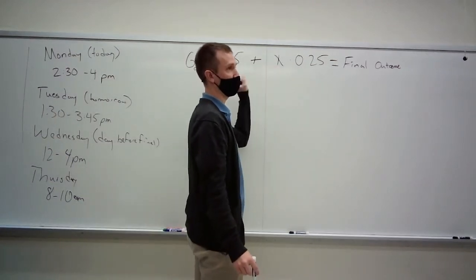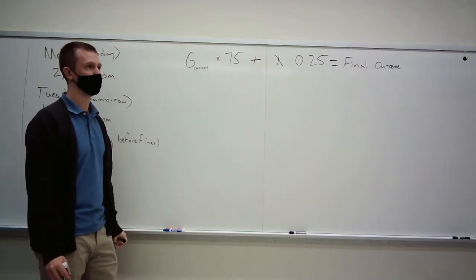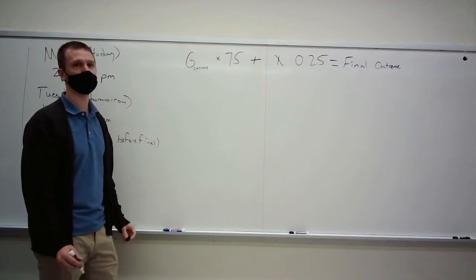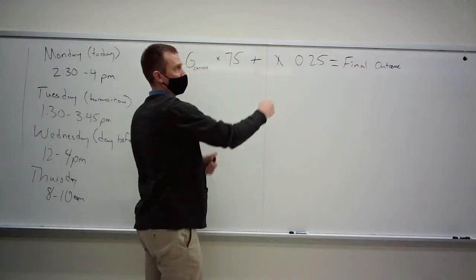Then you take a random variable x, this is your final exam grade as a percentage, multiply it by 0.25, and this is your final outcome. So this line, you take your current grade on WebAssign as a percentage times 0.75, that's a number, plus 0.25x. This is a line of certain slope. The different x values are the final score, and that can help you predict what your final grade will be.